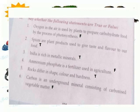Ammonium phosphate is a fertilizer used in agriculture. Answer: False. Rocks differ in shape, color and hardness. Answer: True. Carbon is an underground mineral consisting of carbonized vegetable matter. Answer: False.